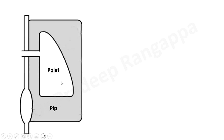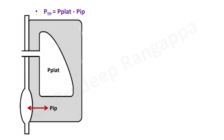We have maneuvers to measure p-plat: we do an end-inspiratory hold and measure p-plat, which reflects alveolar pressure. But how do we measure intrapleural pressure? Intrapleural pressure is measured by an esophageal balloon catheter placed in the esophagus — that is the whole value of this device. So transpulmonary pressure is p-plat minus intrapleural pressure; p-plat is usually positive.